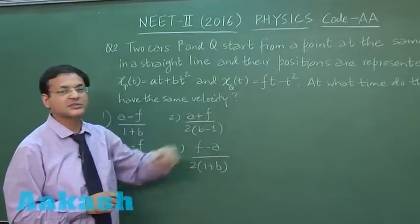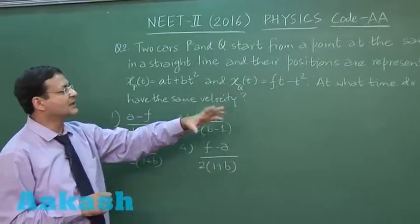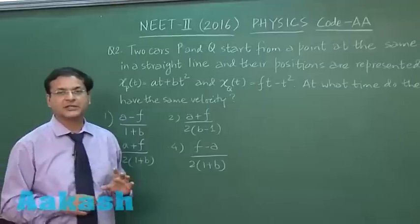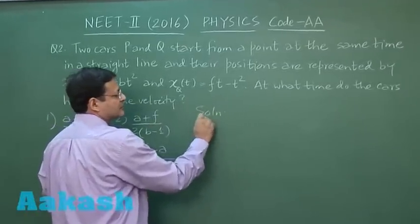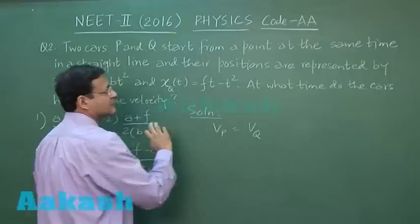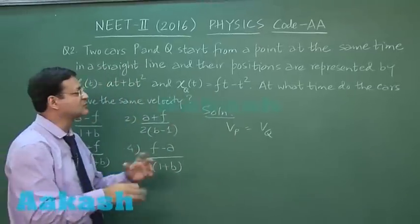FT minus T square, once again this is a function of time. Now they are asking at what time do the cars have the same velocity. That means here you have to say that VP and VQ, they have to be same - velocity of P and velocity of Q, that has to be same.